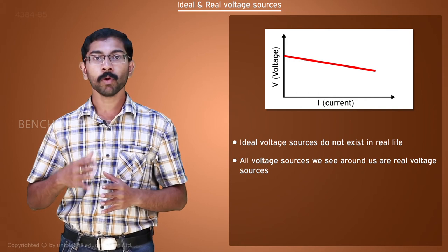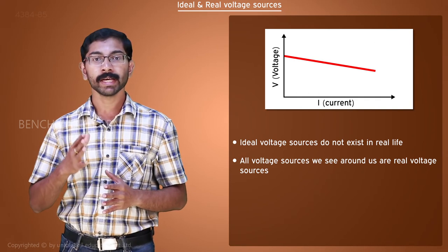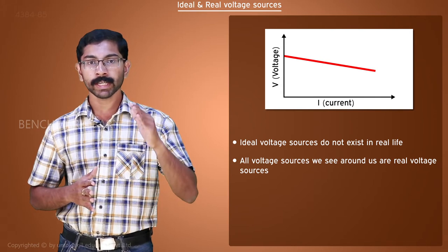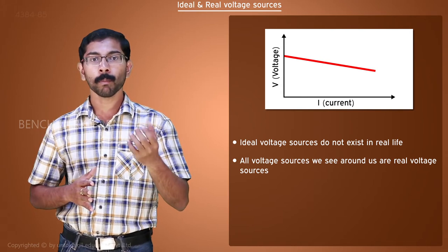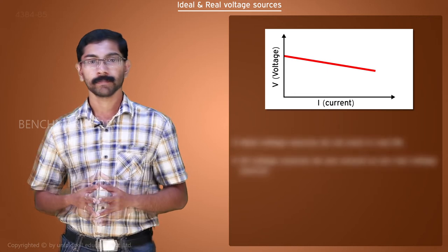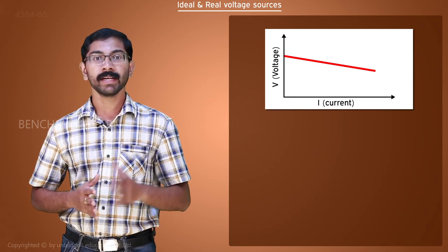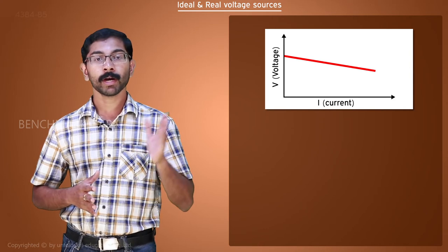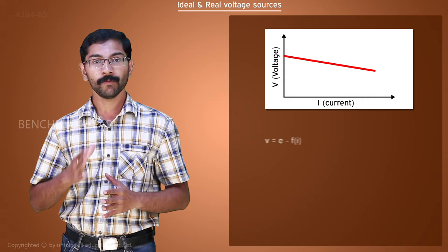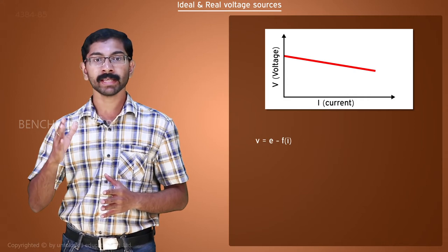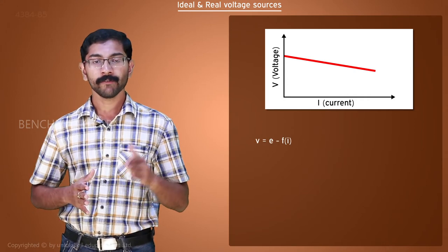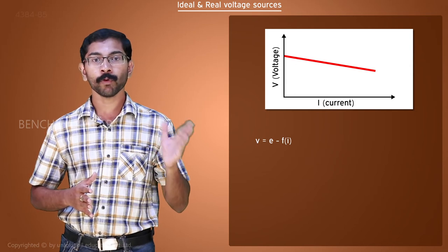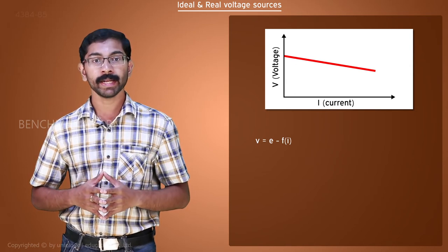From the Volt Current Characteristics of a Real Voltage Source, we can see that the terminal voltage drops when we draw more current from the source. Mathematically, this can be considered as subtracting a current dependent term from a constant EMF. V is equal to E minus F of I, where V is the terminal voltage, E is the constant EMF and F of I is the current dependent term.